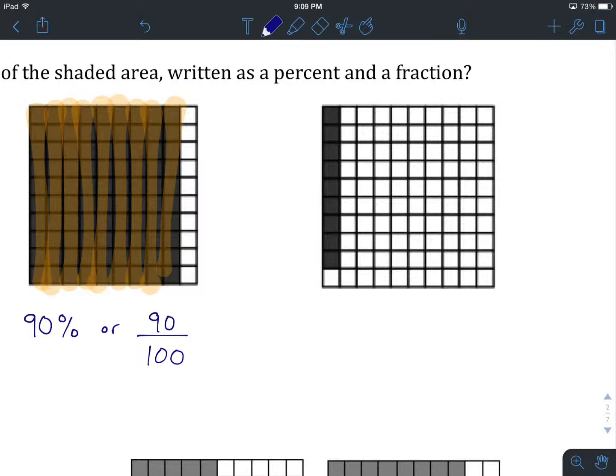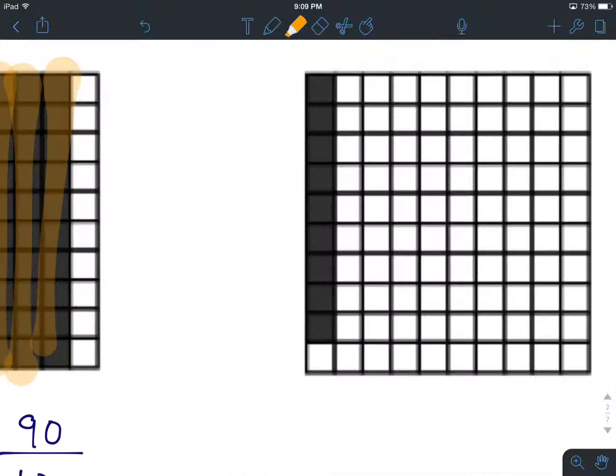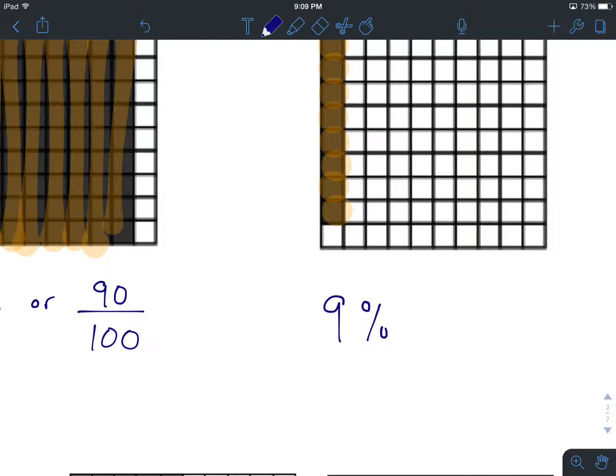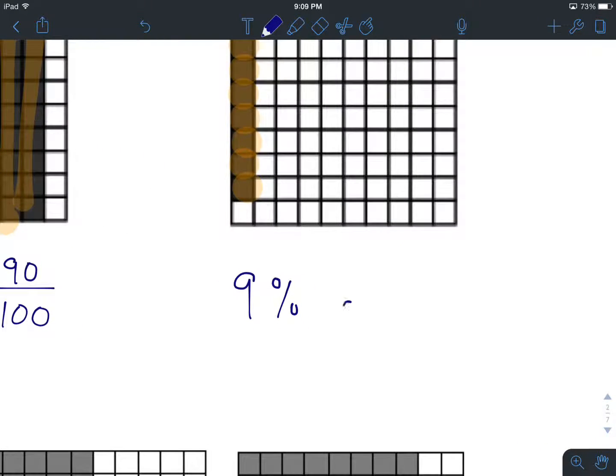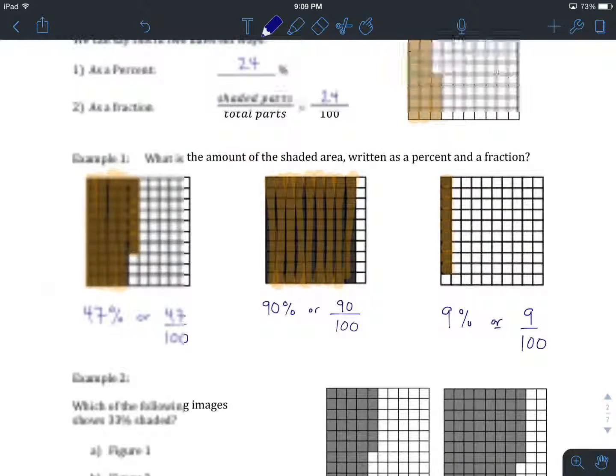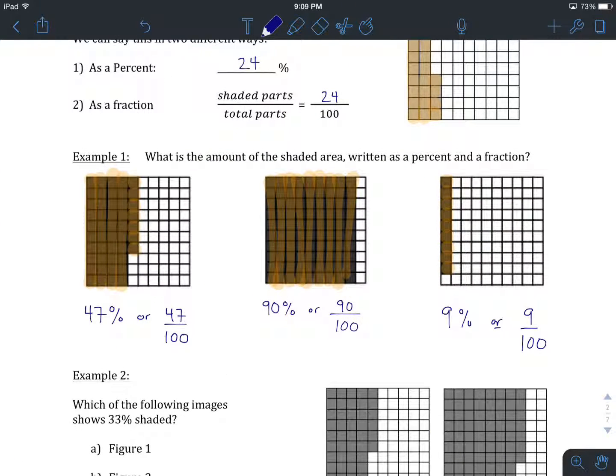Okay, you're back. This row doesn't even have 10. It's got 1, 2, 3, 4, 5, 6, 7, 8, 9 pieces shaded in. So that's going to give us a total of 9%, and written as a fraction, we would write this as 9 parts out of 100 total parts. So that's how we go about writing percentages as a percent and as a fraction.